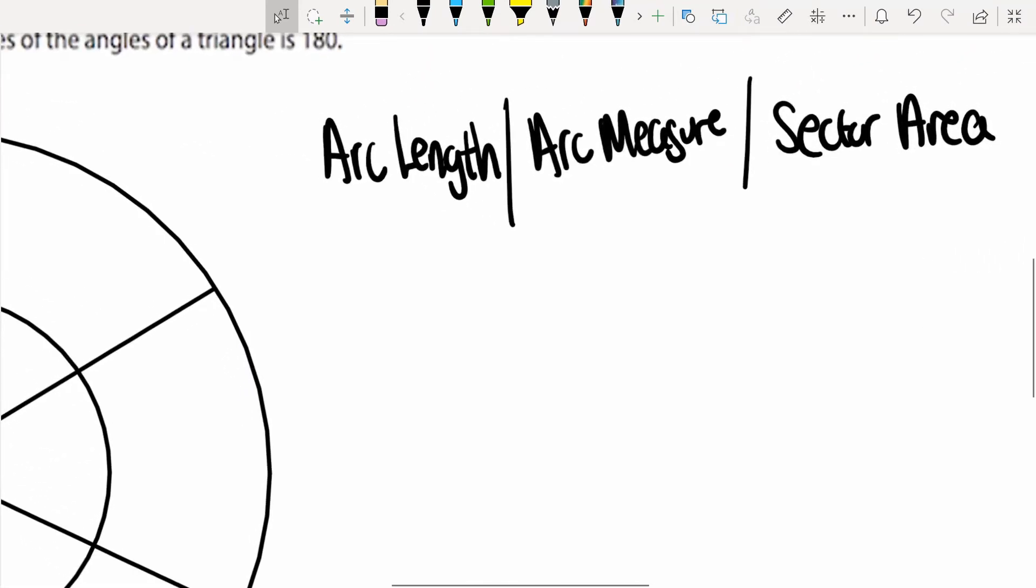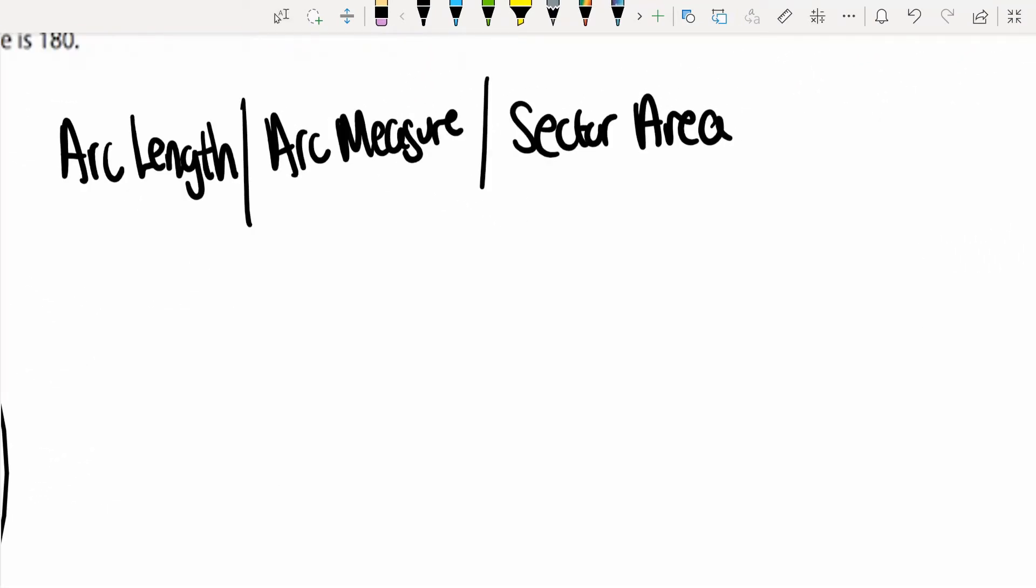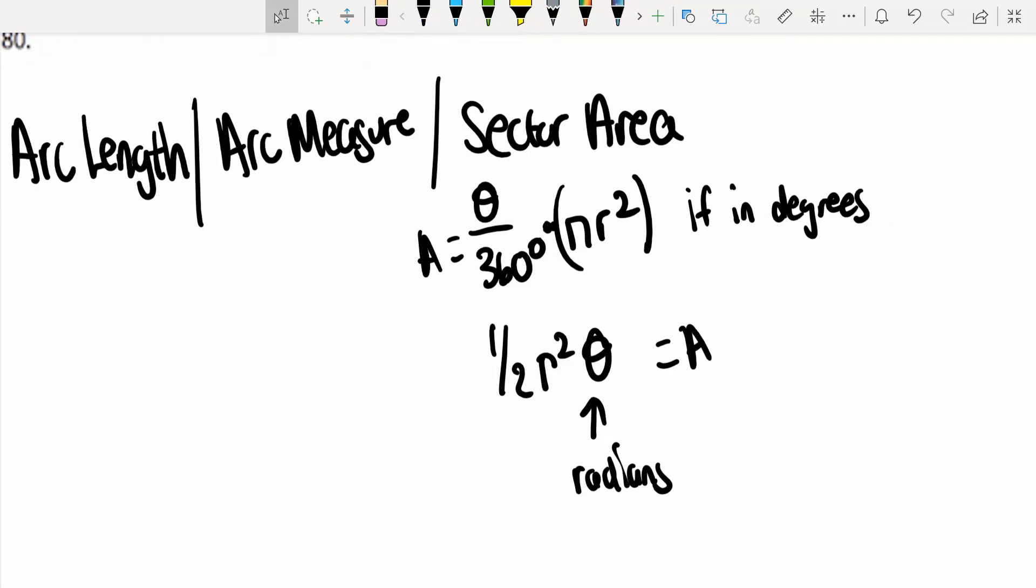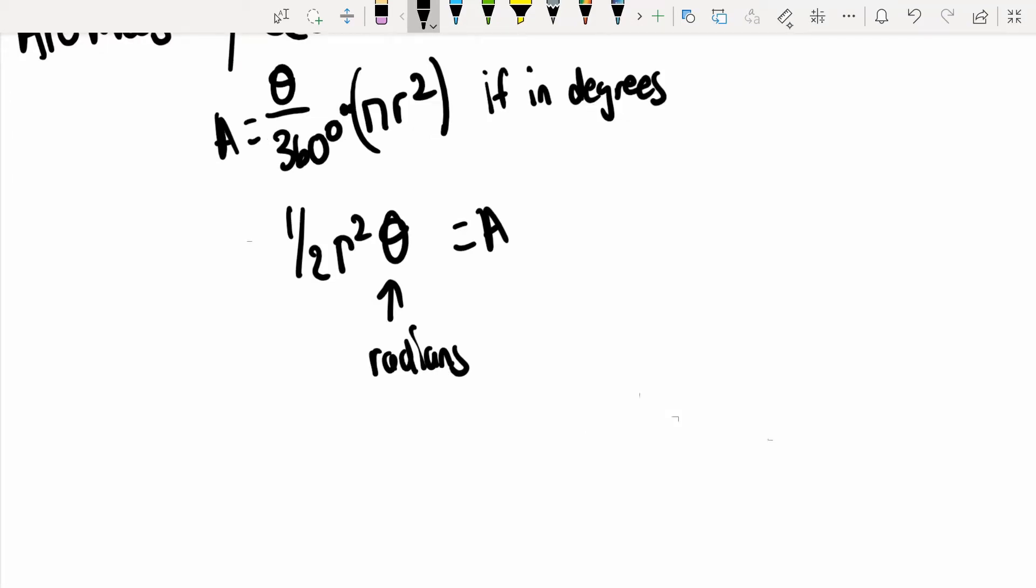Lastly, what we have is arc length, arc measure, and sector area. If you remember sector area, that's just going to be θ/360 times πr². You multiply those two, and that's how you get the sector area, if it is in degrees. Sometimes, they might give you the angle measure in radians. In the first one, what you're doing with this θ/360 is you're finding how much of the circle the central angle actually takes up, and you're just multiplying by the area of the circle.